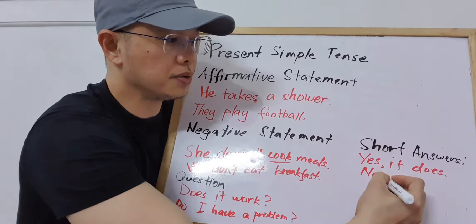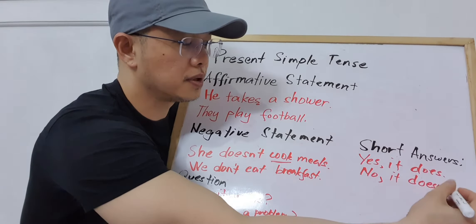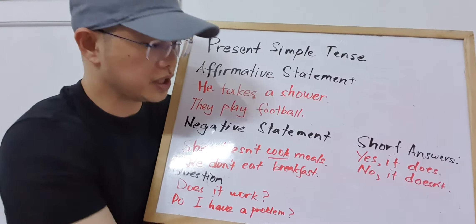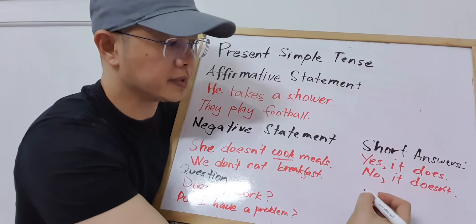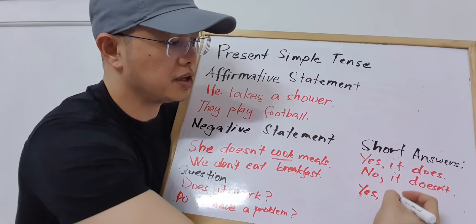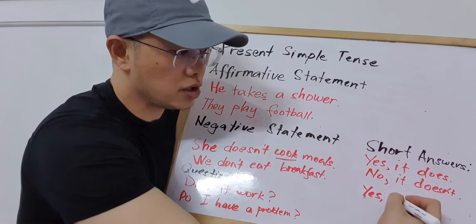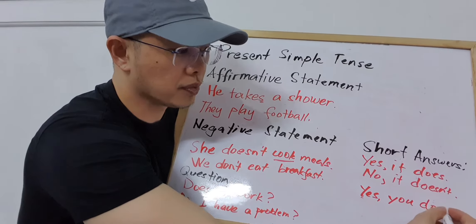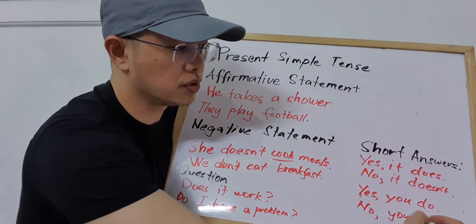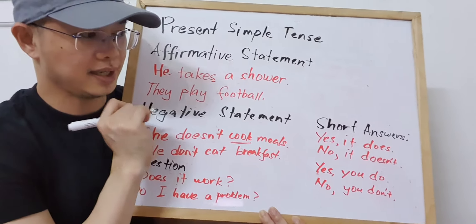If the answer is no, you say 'No, it doesn't.' For the second question, 'Do I have a problem?' — if your answer is yes, you say 'Yes, you do.' If the answer is no, you say 'No, you don't.' That's how you make short answers, and there is a separate lesson for proper construction of short answers.